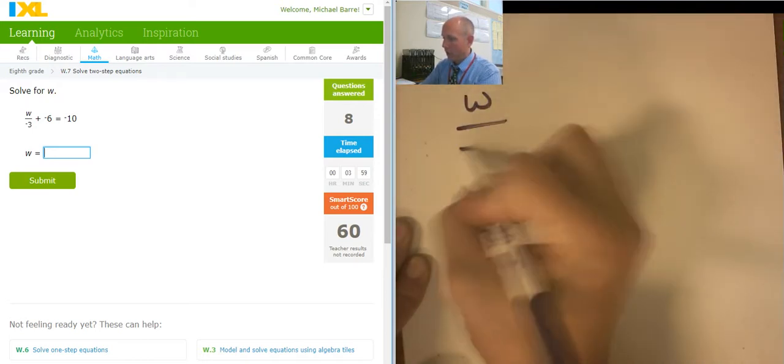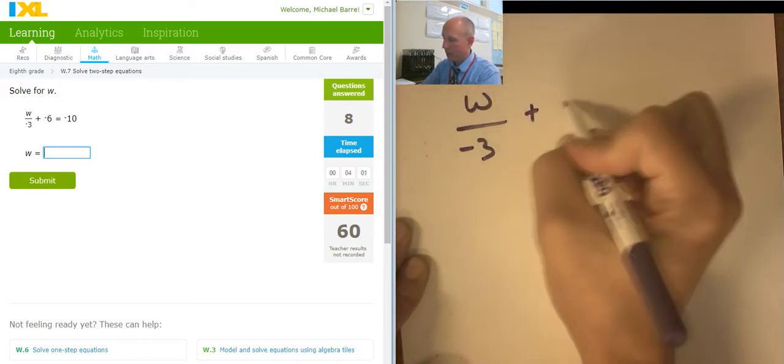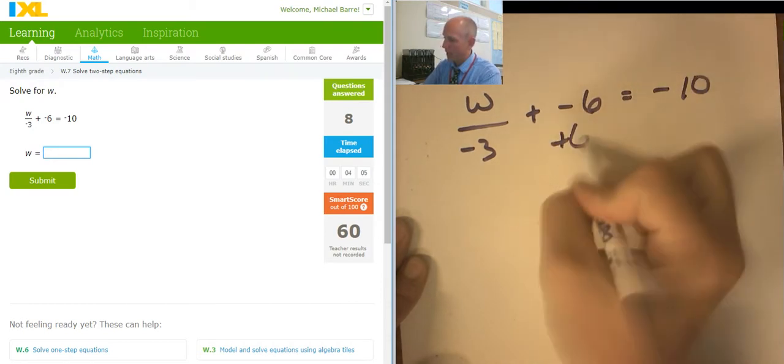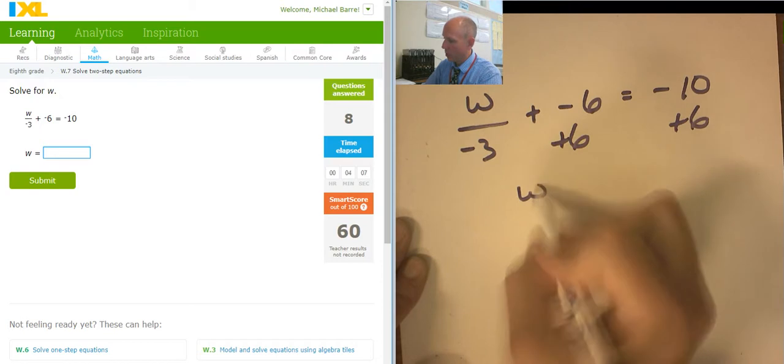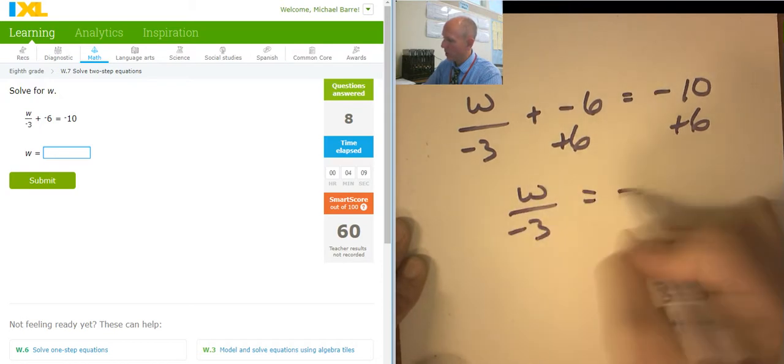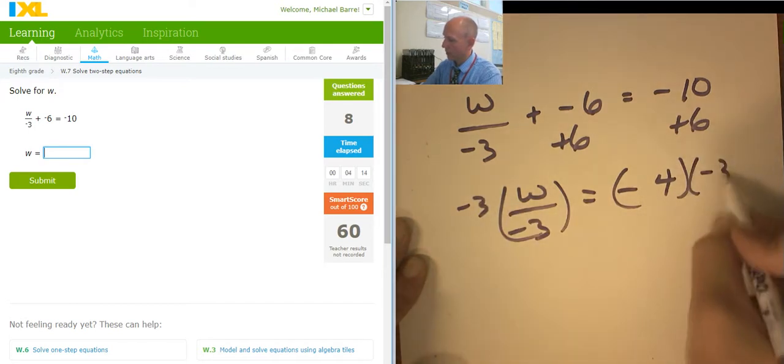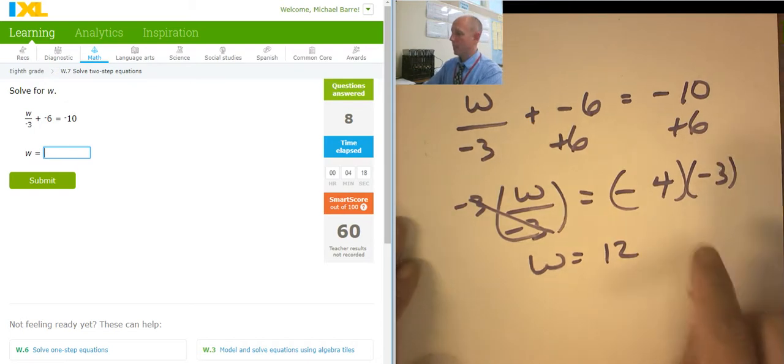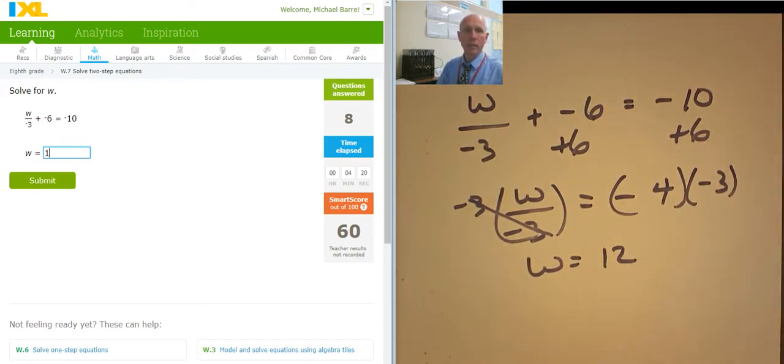w over negative 3 plus negative 6 equals negative 10. Adding 6 to both sides. w over negative 3 equals negative 4. Multiplying both sides by negative 3. w equals positive 12. Why is it positive? Negative times a negative is a positive 12.